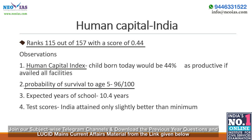Regarding expected years of school: a child in India who starts school at age 4 can expect to complete 10.2 years of school by age 18. Regarding harmonized test scores: students in India scored 355 on tests on a scale where 625 represents advanced attainment and 300 represents minimum attainment — Indian students score very close to the minimum value.